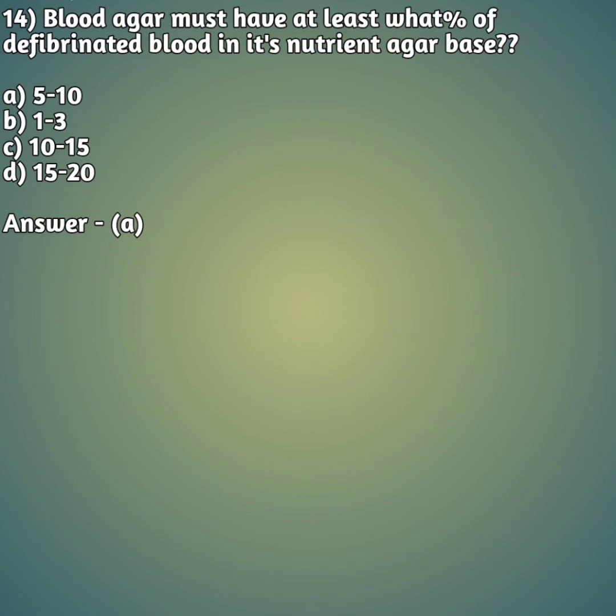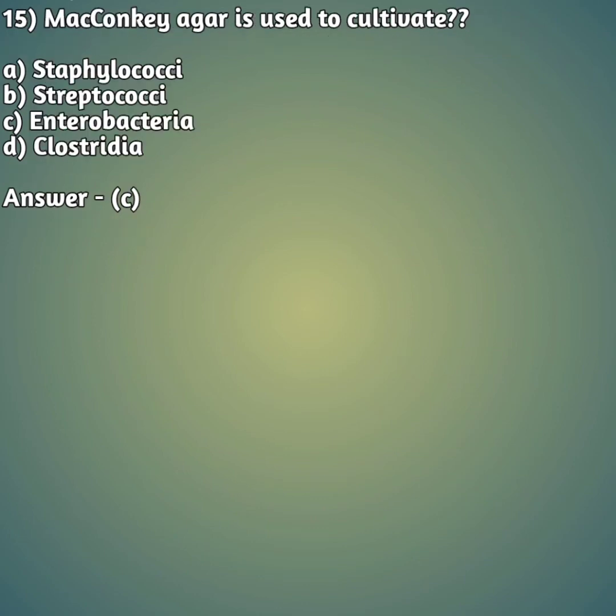Our fourteenth question: blood agar must have at least what percentage of defibrinated blood in its nutrient agar base? Option A: 5 to 10, option B: 1 to 3, option C: 10 to 15, option D: 15 to 20. The right answer is option A — 5 to 10 percent defibrinated blood is used in the nutrient agar base.